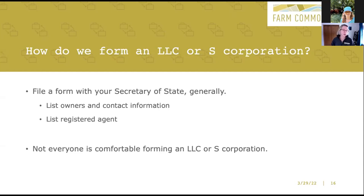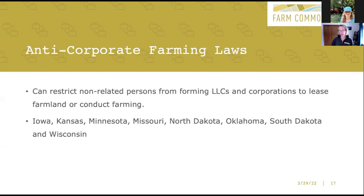A couple of things I need you to know before we get to the end of our time. Anti-corporate farming laws can restrict non-related persons from forming LLCs and corporations to either lease farmland, own farmland, or conduct farming. If you live in one of the states listed — Iowa, Kansas, Minnesota, Missouri, North Dakota, Oklahoma, South Dakota, and Wisconsin — don't rush out and form an LLC or a corporation when you have unrelated persons involved. You've got to check the rules to make sure you're not violating them. We have thorough flow charts in our book, and some Googling can also help you.